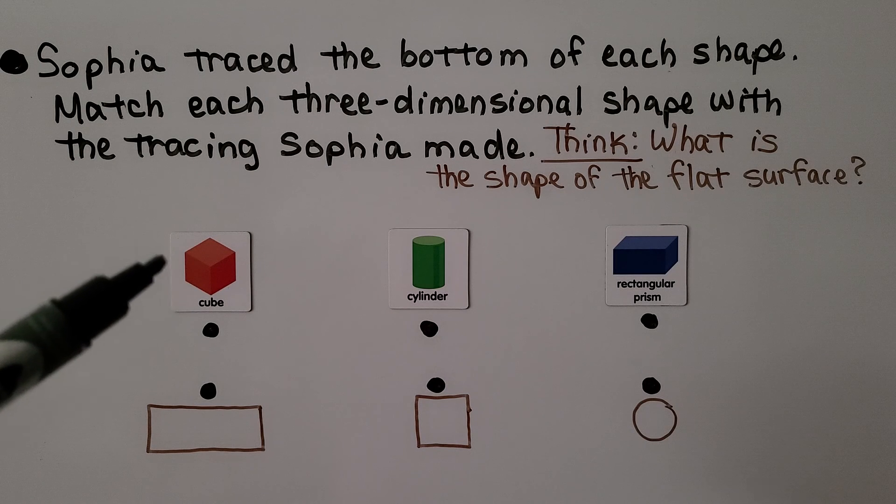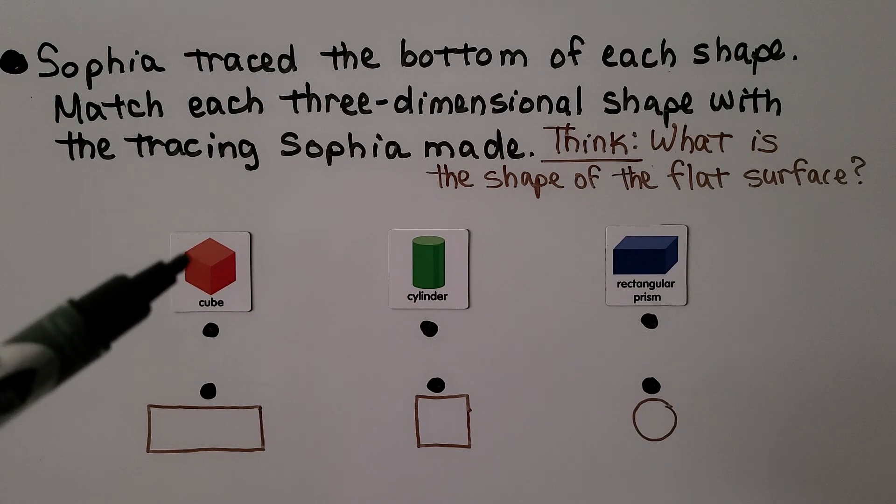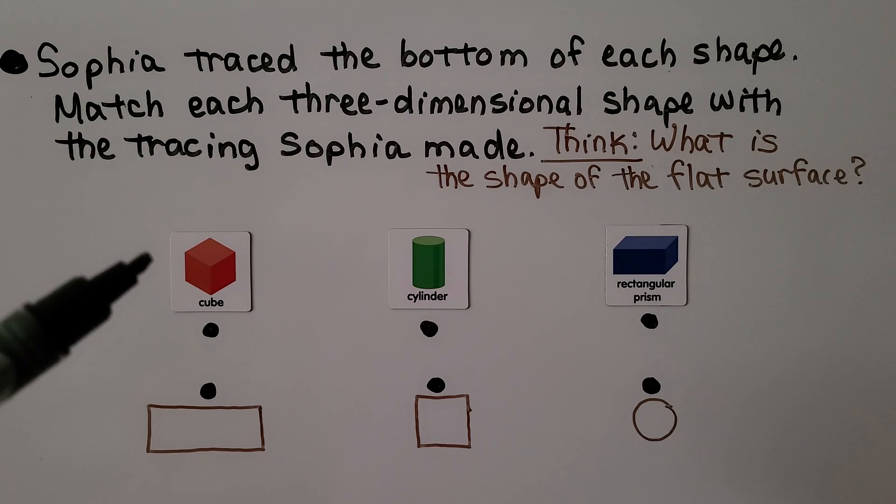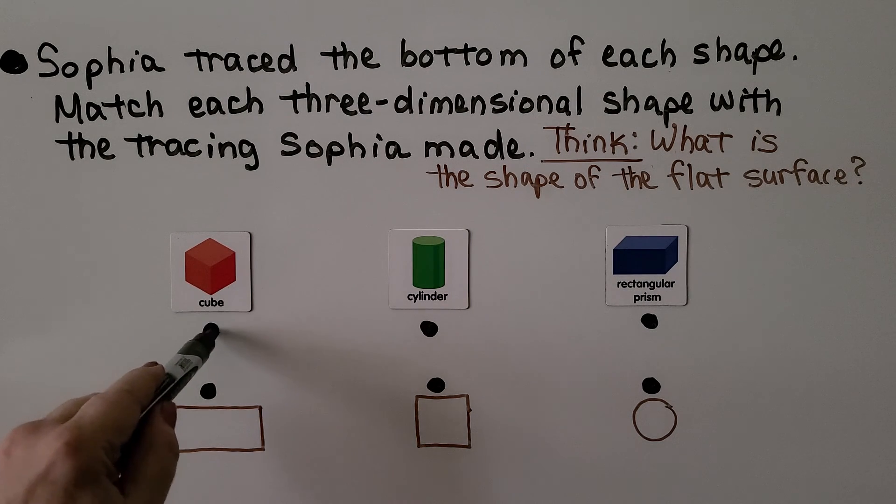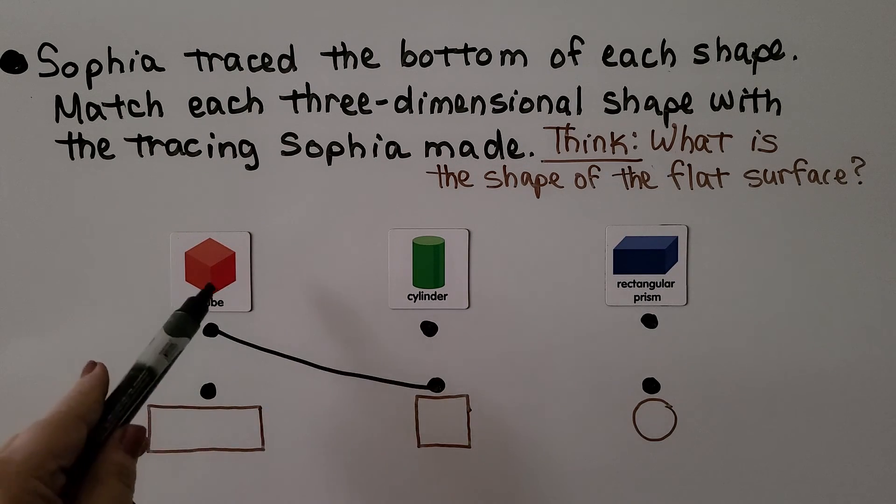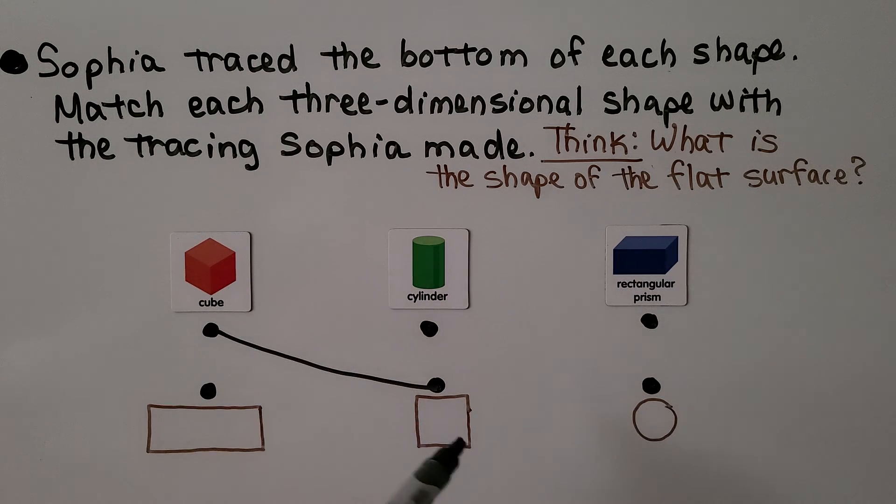We'll look at the cube. What is the shape of the flat surface on the cube? Which one of these would it match? If you said square, you're right. If you trace the flat surface of a cube, it will be a square.